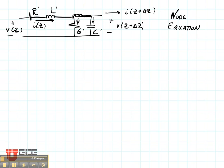So we're going to write that I of z, that's this current right here, minus g times v of z plus delta z minus c dv dt minus i of z plus delta z equals zero.